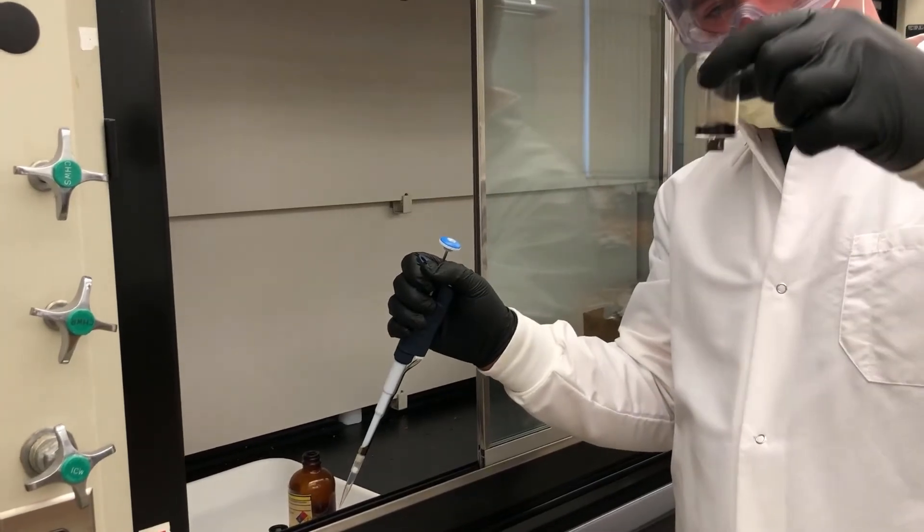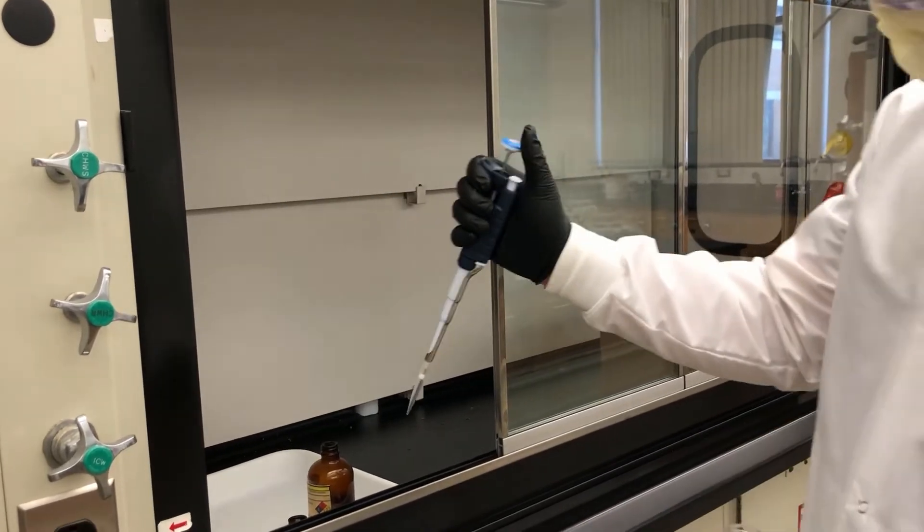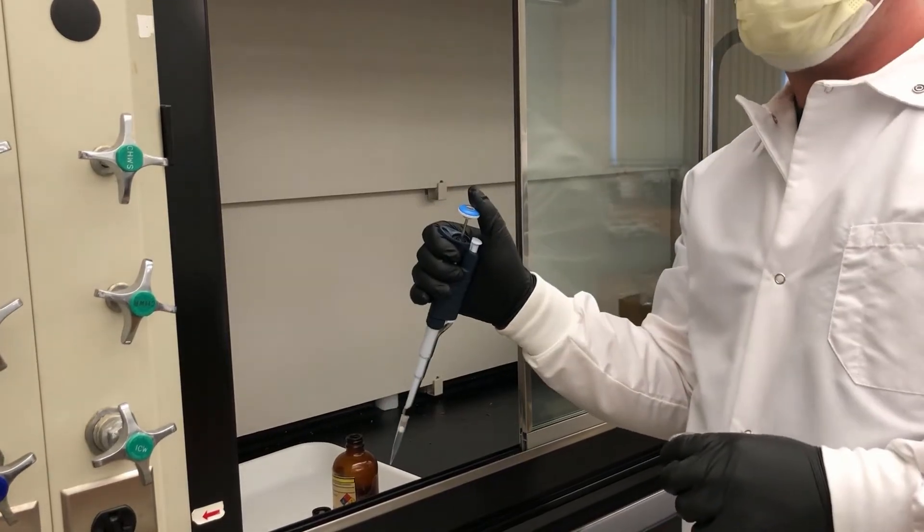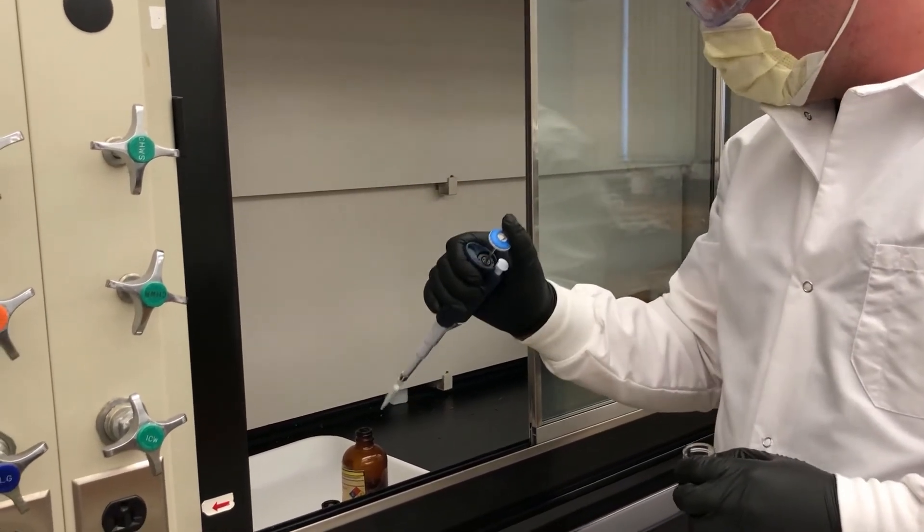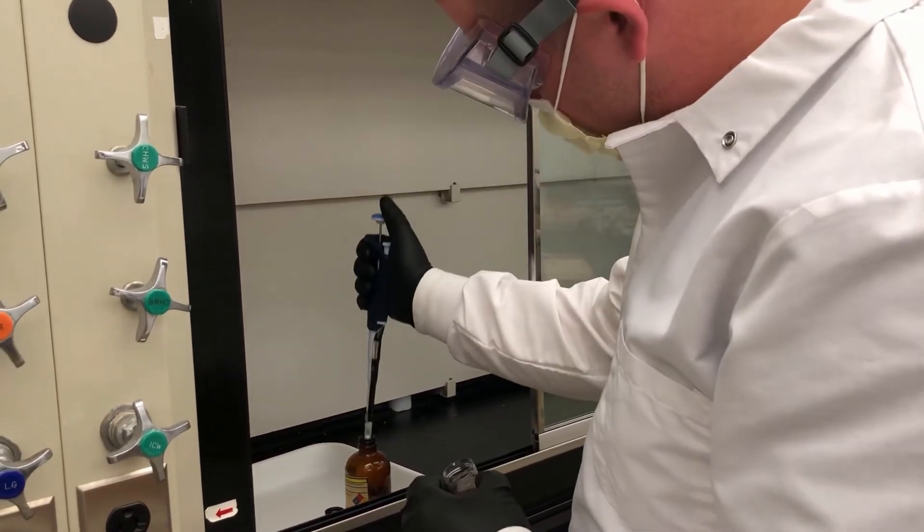Okay. So now we have our nanoparticles and our ferrofluid is almost complete. What we need to do now is I have my micropipette and we're going to get about one milliliter of tetramethyl ammonium hydroxide out of here and add it to our ferrofluid. So let's do that.